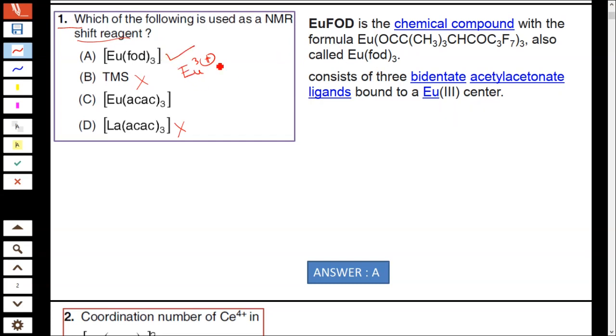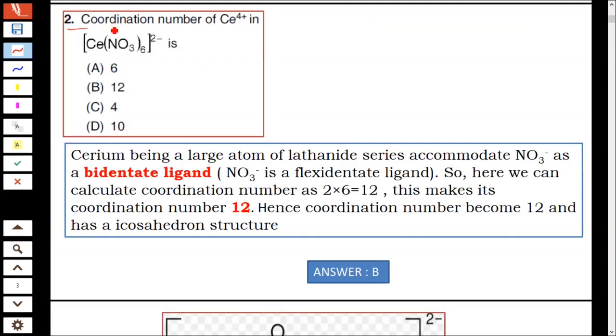Question number 2: Coordination number of cerium⁴⁺ in cerium nitrate. The coordination number was not 6. It contains 6 nitrate ligands. The nitrate NO₃⁻ acts as a bidentate ligand. Cerium, being a larger atom of the lanthanide series, accommodates NO₃⁻ as a bidentate ligand, which is a fluxional ligand. We can calculate the coordination number as 2 times 6, which is 12.